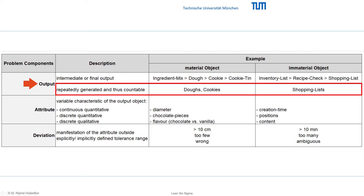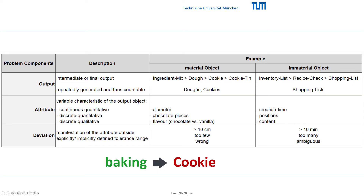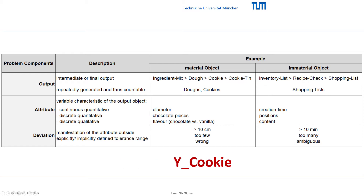Outputs of a process are repeatedly generated objects. Thus, they are countable and can be labeled with a noun or compound noun, presented in singular and plural. Outputs are the results of the upstream process. To index their dependence on upstream influences, they are denoted as a dependent variable with y, regardless of whether we describe, model, specify, or measure outputs. Our cookies can therefore be indicated as y-cookie, to distinguish them from, for example, y-shopping-list.